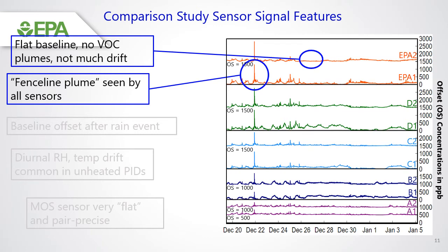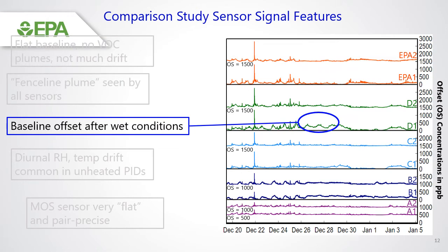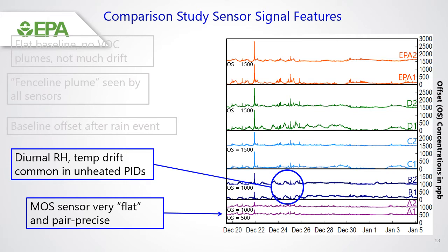Looking closer at common signal patterns seen in this sensor data: first, consider the flat baseline area shown on one of the EPA sensors — a time of low activity and low drift. Conversely, there is a sharp signal spike recorded by all sensors on December 21st. Weather can also really affect the sensors; wet conditions can drive baseline drift in an unheated PID and create envelopes of elevated baseline. Unheated sensors can also be affected by environmental conditions at certain times of day, shown in the diurnal pattern at sensor B1. Both B sensors are prototypes. Finally, the A pair of sensors are very precise, meaning the co-located sensors look very similar over time throughout the study.